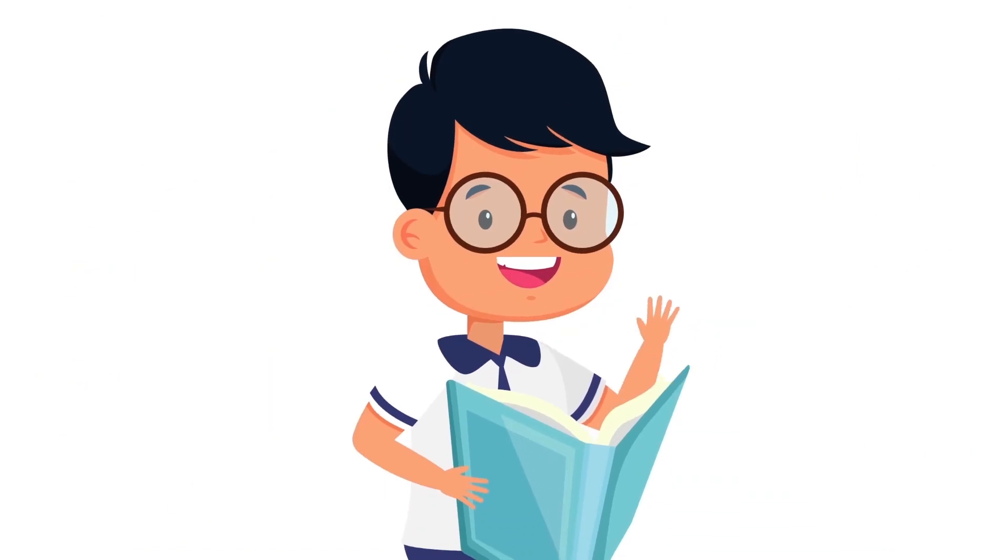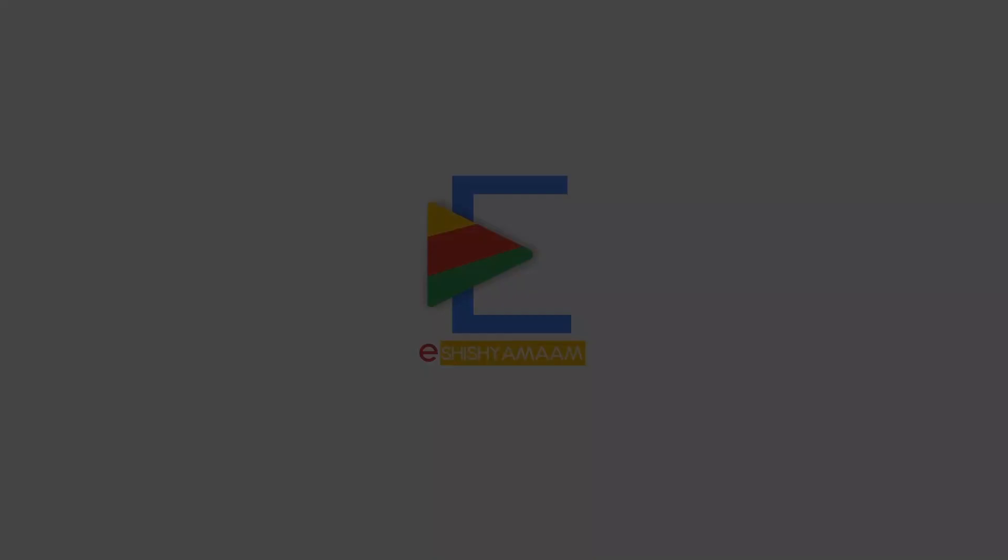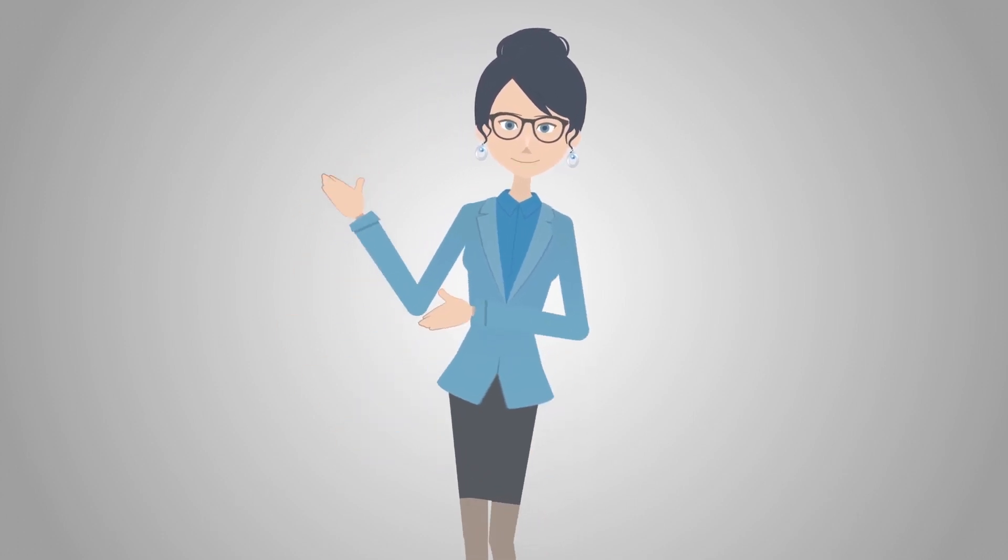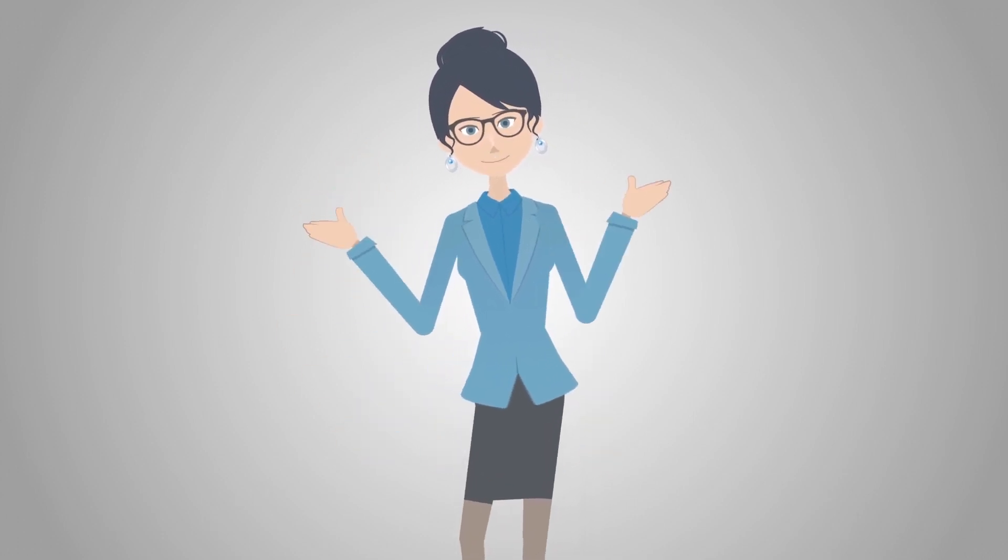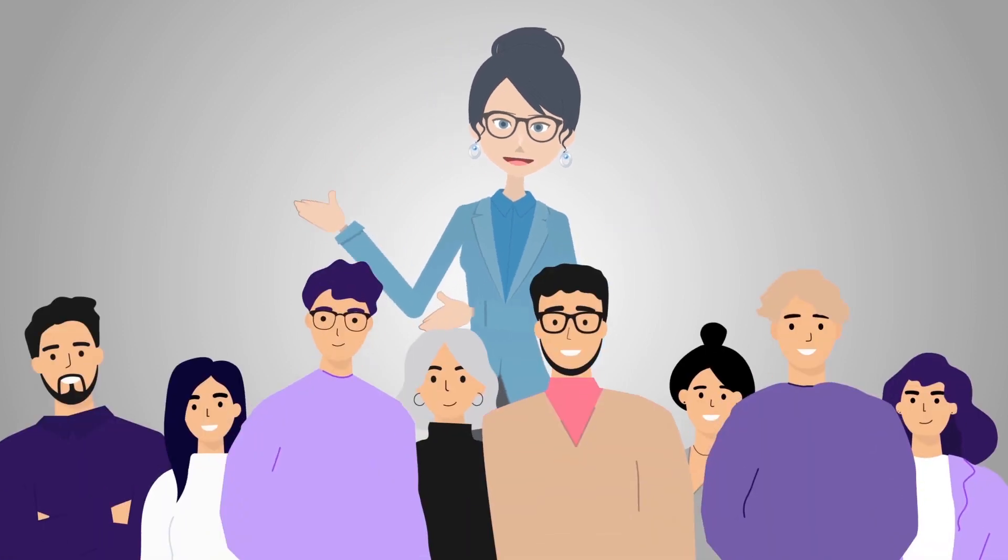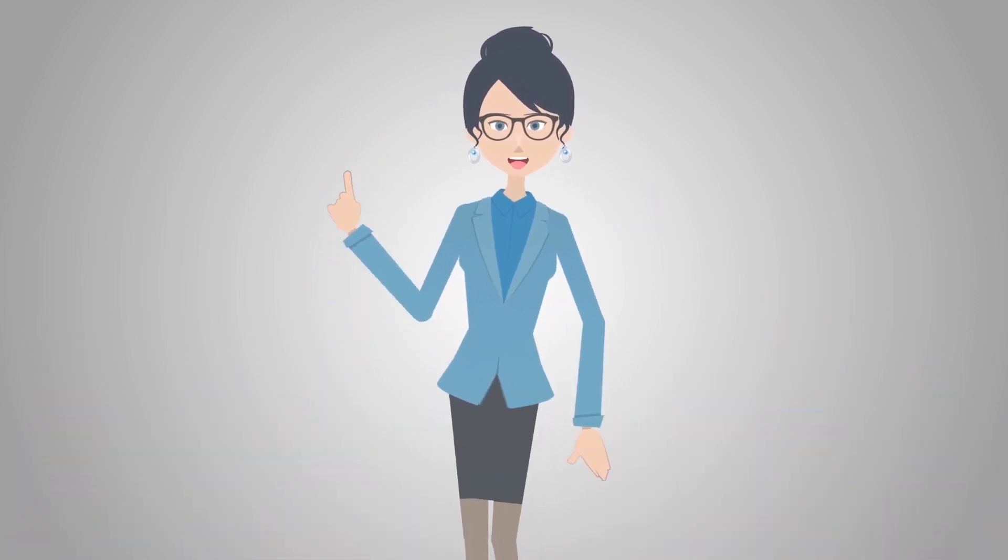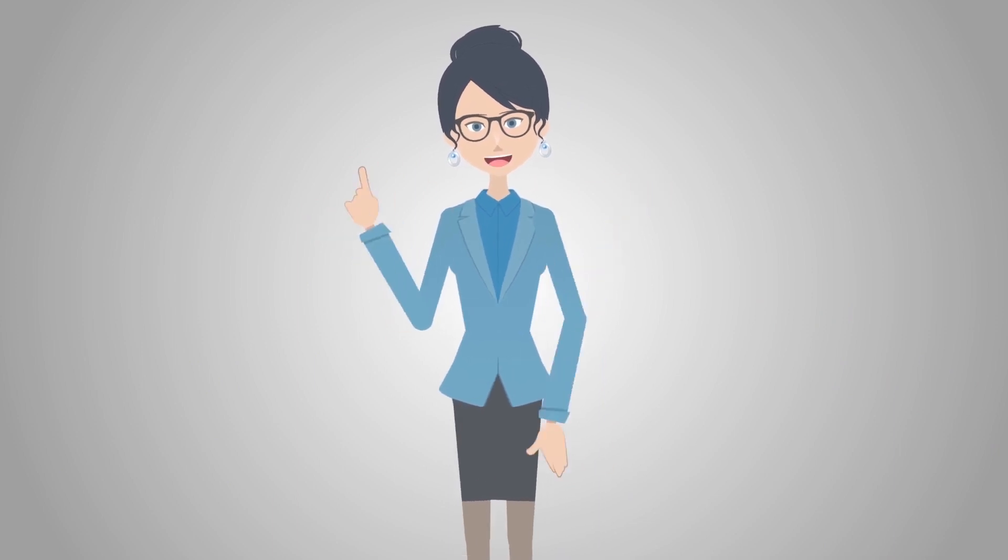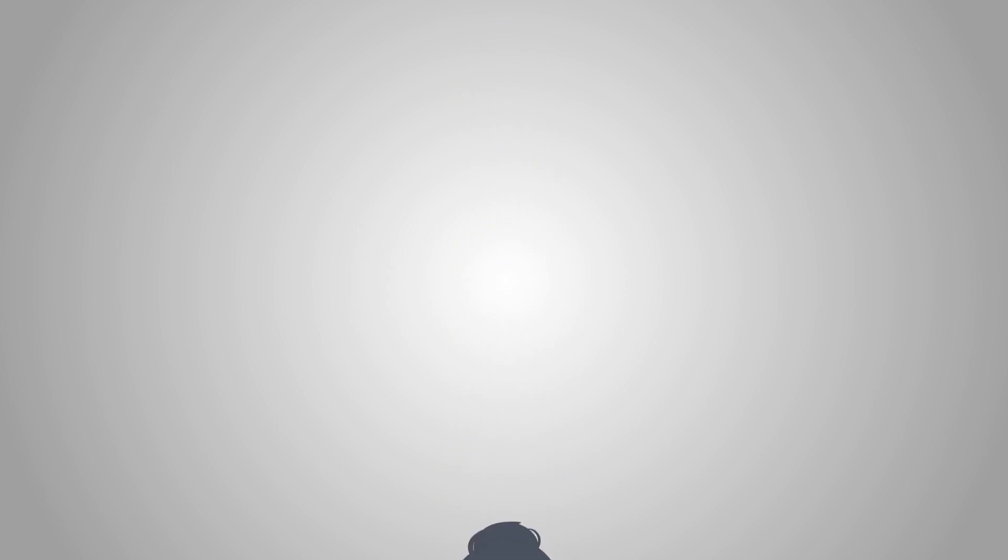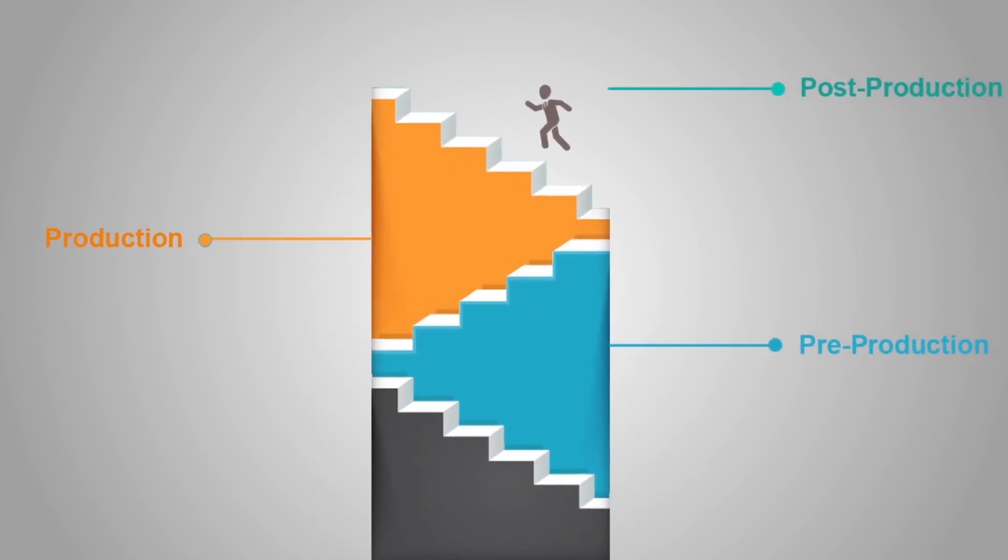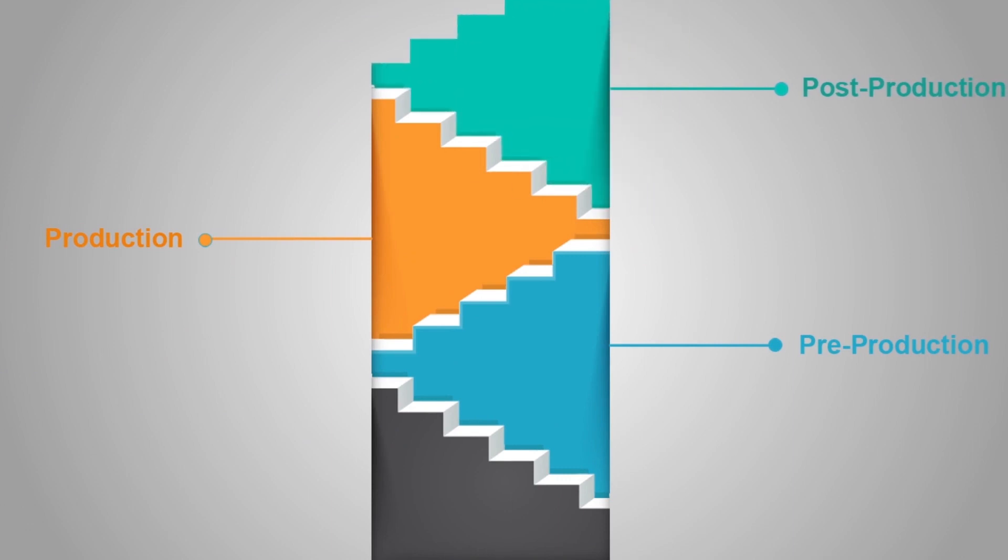Making a high quality custom animated video requires a big team of professionals following a complete production pipeline process. This process is divided into three stages: pre-production, production, and post-production. Let's start with the most important step of all, pre-production.